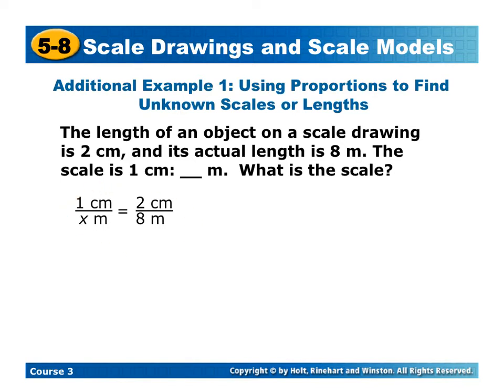So here we set up a proportion. The 1 centimeter over the x number of meters is the same as 2 centimeters over 8. Now you could cross multiply and divide. If we did that, we had 1 times 8, which is 8, divide by 2 is 4. So here, our scale is 1 centimeter is equal to 4 meters on the actual object.